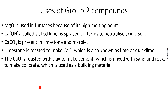Calcium hydroxide, which is also called slaked lime, is sprayed on farms to neutralize acidic soil. Calcium hydroxide is basic in nature, so it can easily neutralize acids by reacting with them.